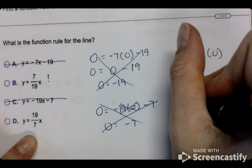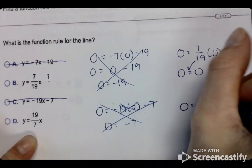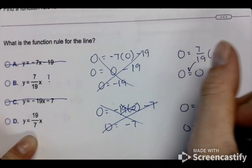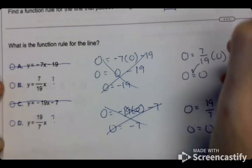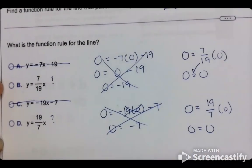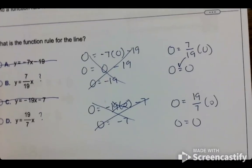Welcome back. 0 equals 19 over 7 times 0. 0 does equal 0. So that means it's one of these. So now we go and we plug in this and see the other point and see which one works.